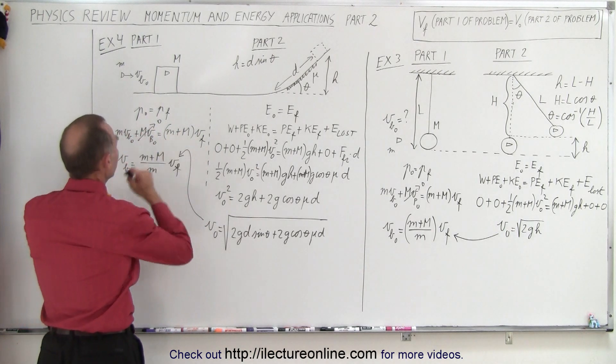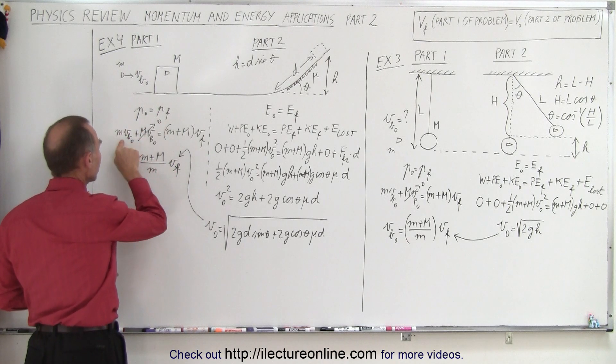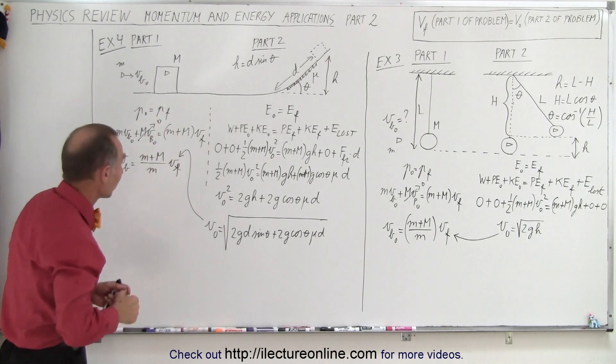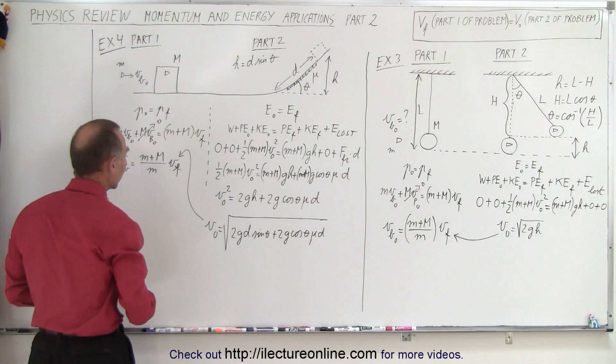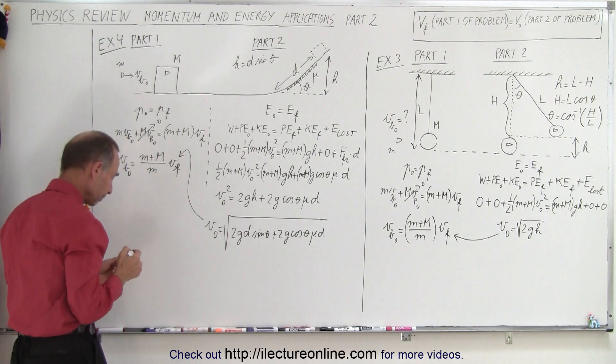Again, we have the conservation of momentum and the conservation of energy. In the conservation of momentum, we have the momentum of the bullet plus the momentum of the block, but if the block isn't moving, it has zero momentum, and then the momentum right after the collision, m plus M because they stick together. We can solve that equation for v initial of the bullet.